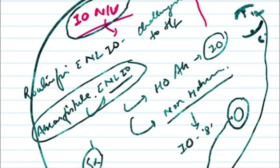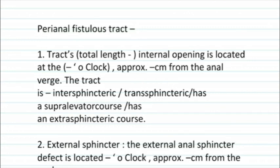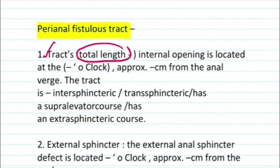Now let's discuss the MRI reporting format for perianal fistula. First, describe the tract's total length — from the internal opening to the external opening. Then describe where the internal opening is located, in terms of the anal clock and its distance from the anal verge.